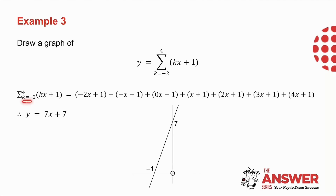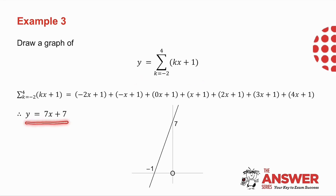Starting with k equals minus 2, I get minus 2x plus 1, then the next term is minus x plus 1, and I go all the way up to 4x plus 1. So I've written the series out in full. Collecting like terms, I get y equals 7x plus 7. This sigma notation is exactly the same as drawing y equals 7x plus 7 — a straight line with y-intercept 7 and x-intercept minus 1. Problem-solving questions just need courage and thinking — they're not all impossible.